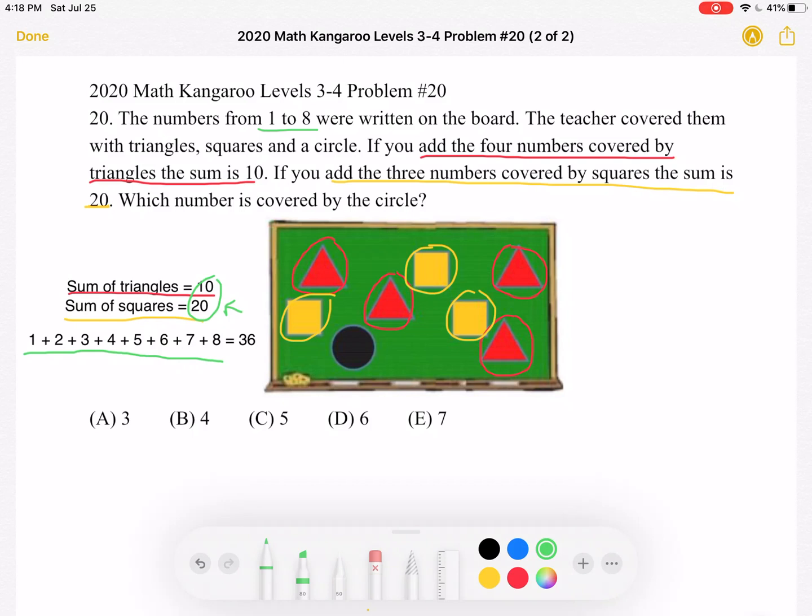The total sum of the numbers written on the board is 36. And the total sum of the numbers that we know, the triangles and the squares, is 30. So if we take 36 and subtract 30, we will get the number covered by the circle. That's the only number we don't know. It is 6. This means that answer choice D must be correct.